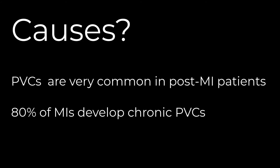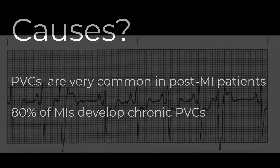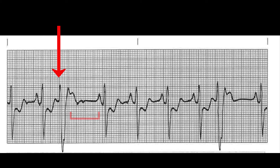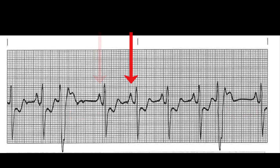It's also important to recognize that PVCs are extremely common in post-MI patients. In fact, approximately 80% of all MI patients will develop chronic PVCs. PVCs are usually followed on the ECG by a compensatory pause, because they've prevented the next normal impulse from transmitting through to the ventricles. They typically have no impact on the SA node, so it continues to fire, and subsequent impulses move through the AV node and to the ventricles in a normal fashion.